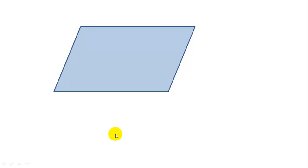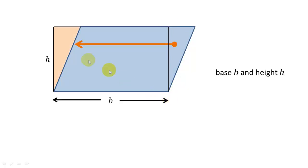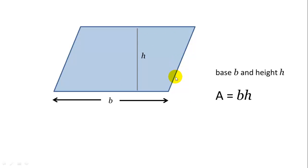Let's cover one more case: a parallelogram. How do we find the area of a parallelogram? We look at base B and height H. We can slice off the little triangle on one end and move it over to the other end — now it looks like a rectangle with base B and height H. So we can calculate the area as base times height. The area of the parallelogram is still base times height. Note: don't mistake the angled side as the height — that is not the height. The height is the perpendicular height to the base.